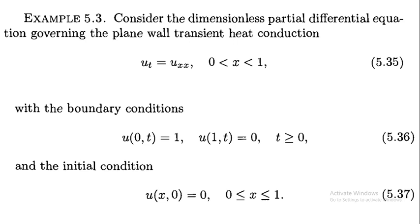Consider the dimensionless partial differential equation governing plane-wall transient heat conduction. 'Dimensionless' means we have used a transformation to eliminate all physical dimensions of time, distance, etc. The equation becomes: u_t = u_xx, for x in [0,1], with boundary conditions u(0,t) = 1 and u(1,t) = 0, and initial condition u(x,0) = 0.